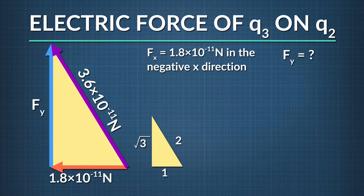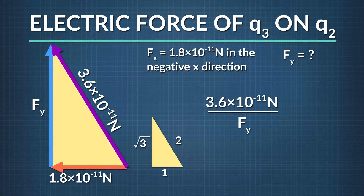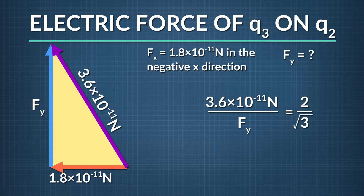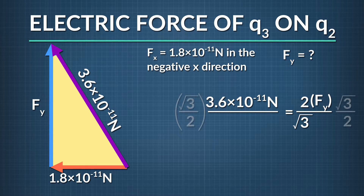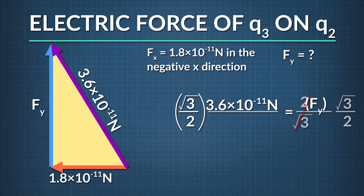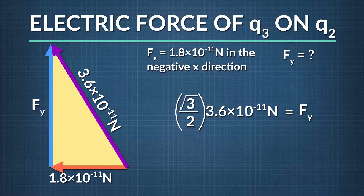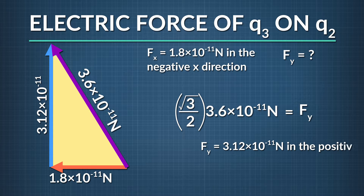To solve for f sub y, we'll use the fact that 3.6 times 10 to the negative eleventh newtons divided by f sub y equals 2 divided by the square root of 3. Multiplying both sides by f sub y and then by the square root of 3 divided by 2, shows us that f sub y equals 3.6 times 10 to the negative eleventh newtons times the square root of 3 divided by 2, which equals 3.12 times 10 to the negative eleventh newtons in the positive y direction.